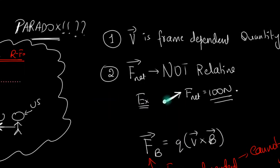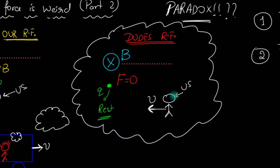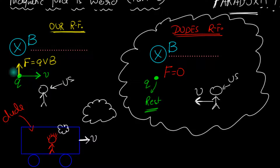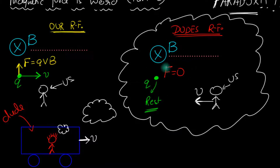How is that possible? In our example there's only one field — the magnetic field — and therefore the only force acting on our charged particle must be the magnetic force QVB. Yet in the dude's reference frame, even though there is that magnetic field, the total force is zero. So how do we resolve that?